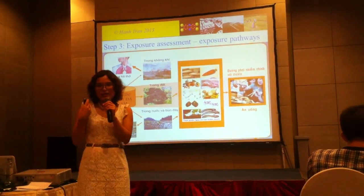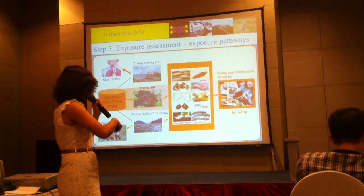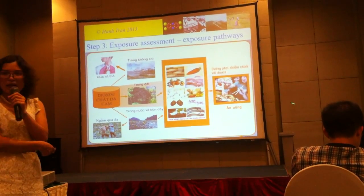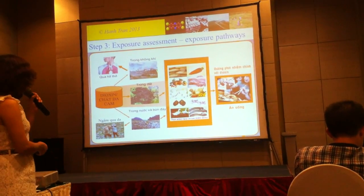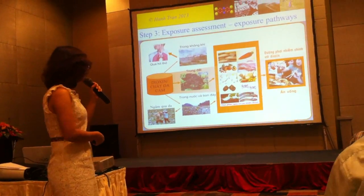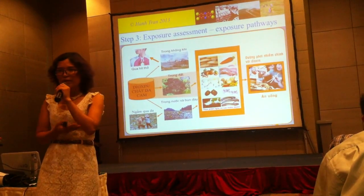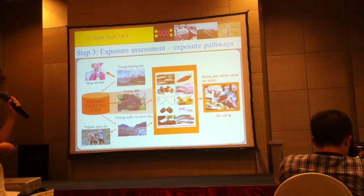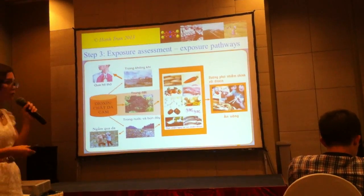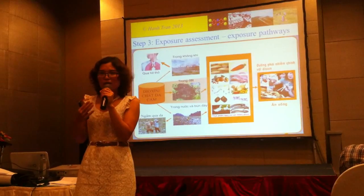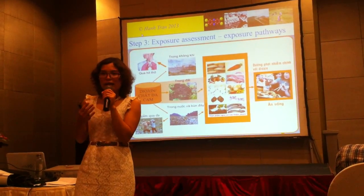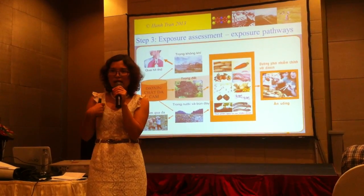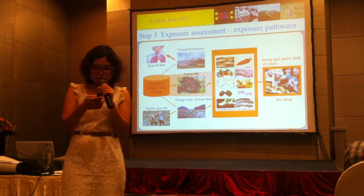For exposure assessment, this is the exposure pathway. The dioxin in Agent Orange and other chemicals can go through the air, soil, and water. People can be exposed through dermal absorption, but this is very limited. The main pathway is through consuming contaminated foods. Studies clearly show that about 90 to 95% of dioxin in the human body comes from contaminated foods.